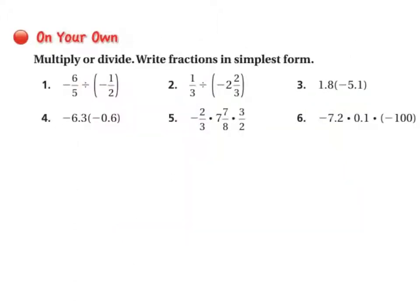Now we're going to work on the On Your Own problems. Be sure you write these in your notebook and follow along carefully. Number 1: we have two negative signs, so we know we're going to end up with a positive answer. It's negative 6/5 divided by negative 1/2. We're going to keep the first fraction, change the sign, and flip the second fraction. Always check to see if you can cross cancel. You cannot in this case. So negative 6 times negative 2 is a positive 12, and that goes over 5, and it simplifies to 2 and 2/5.